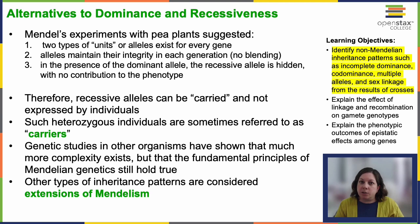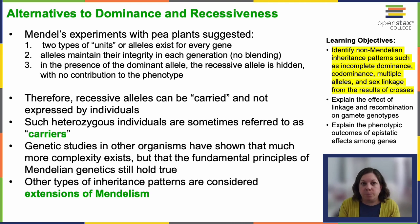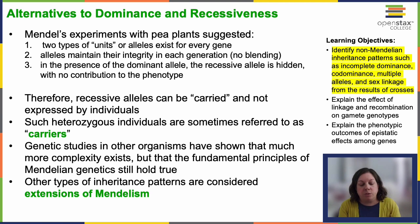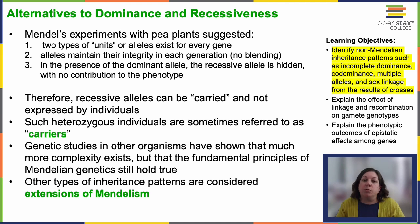Mendel's experiments with pea plants suggested two types of units, or alleles, exist for every gene. We represented those with letters for the genotype. Alleles maintain their integrity in each generation, so we don't see blending. In the presence of the dominant allele, the recessive allele is hidden — it's latent with no discernible contribution to the phenotype. Therefore, recessive alleles can be carried but not expressed by an individual. Such heterozygous individuals are sometimes referred to as carriers, particularly if the trait is associated with causing some sort of disease or health issue.